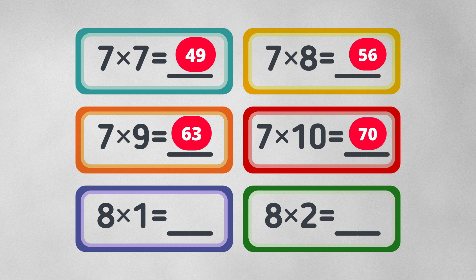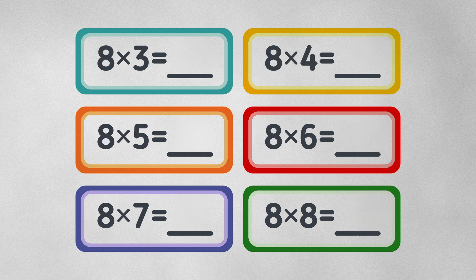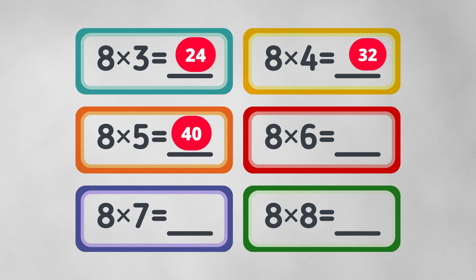Eight times one equals eight. Eight times two equals sixteen. Eight times three equals twenty-four. Eight times four equals thirty-two. Eight times five equals forty.